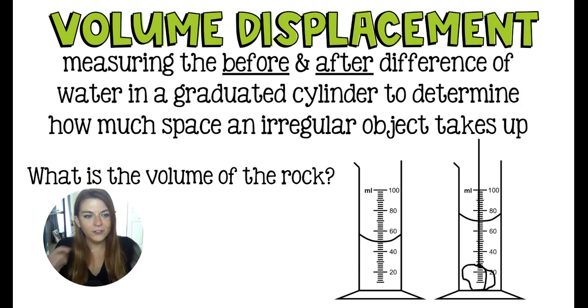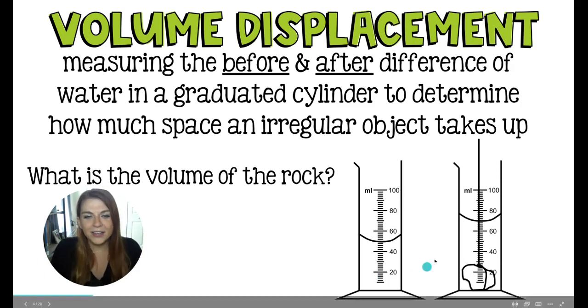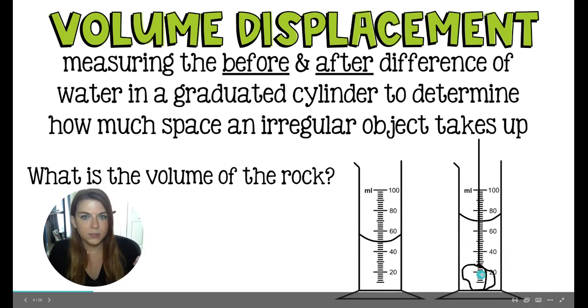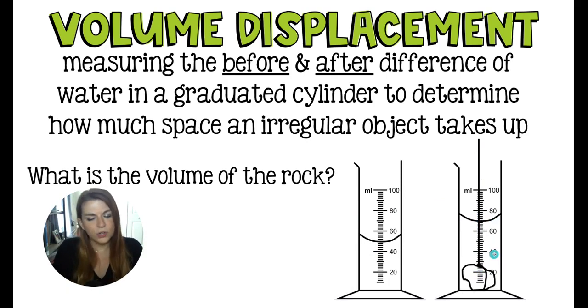If you have ever filled a drink really close to the top and then added ice, you have experienced overflow, I'm sure, because the ice takes up space and it pushes the water out of the glass. So we're kind of doing that, except we don't want to overfill it. So when the rock goes in, it's going to take up some space. That's volume displacement. We take the before and the after. This rock is just attached to a string or a wire to kind of be able to pull it out of the graduated cylinder when we are finished.